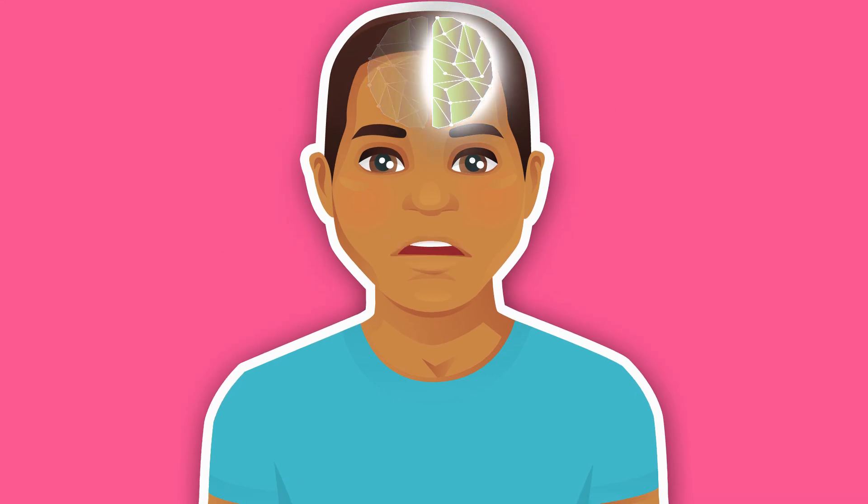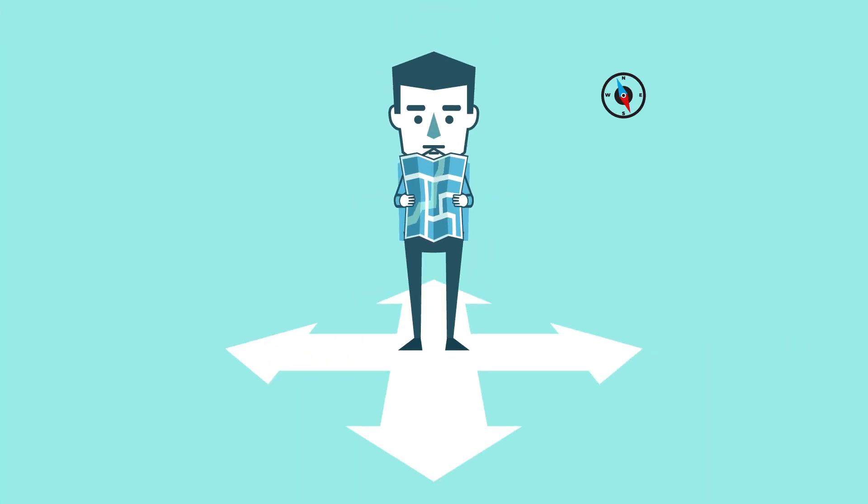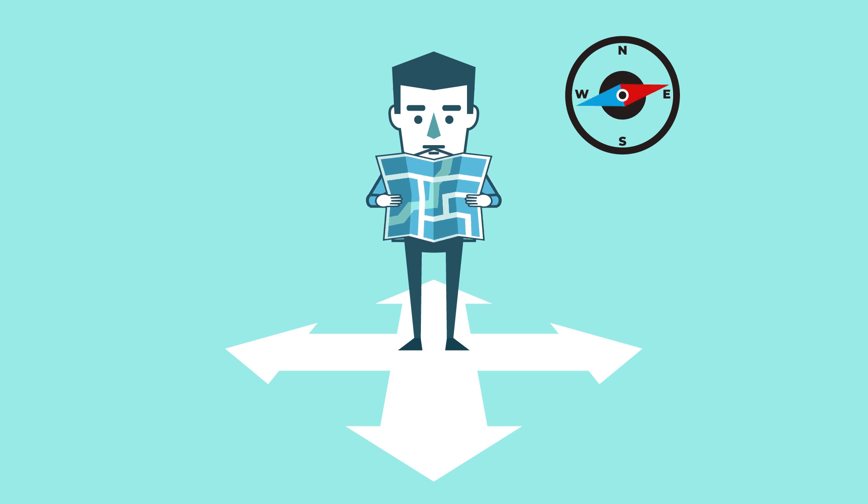For most of us, the left side mainly controls language, while the right side mainly controls visual and spatial abilities. That's why people who've injured the right side of their brain are more prone to get lost.